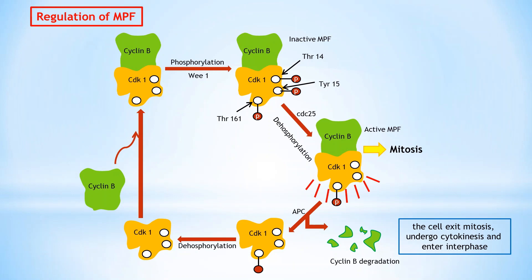Today I have discussed cell cycle checkpoints, defined cyclins and CDKs that regulate the cell cycle, and the structure and regulation of maturation promoting factor MPF in detail. In my next video I will discuss the role of growth factors in cell cycle, Rb, E2F, DNA damage checkpoints, ATM, and ATR in detail.